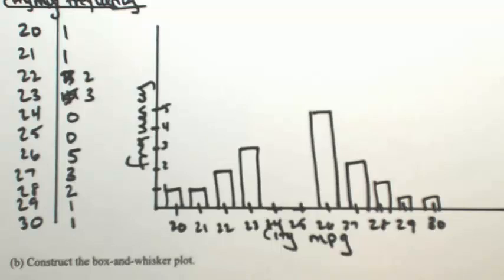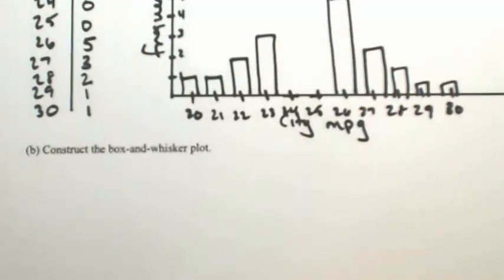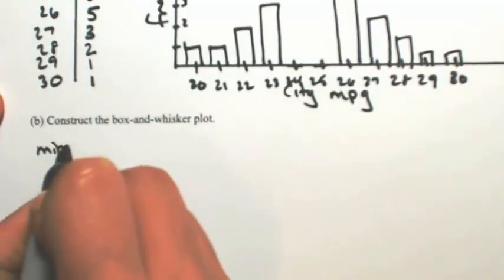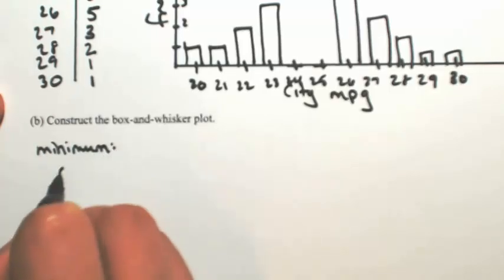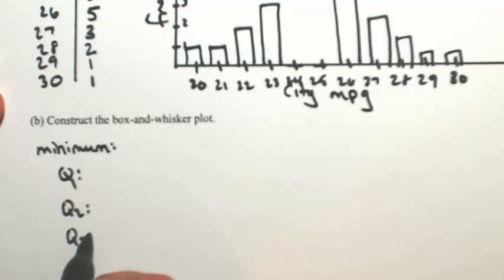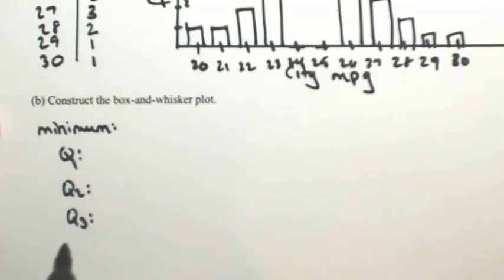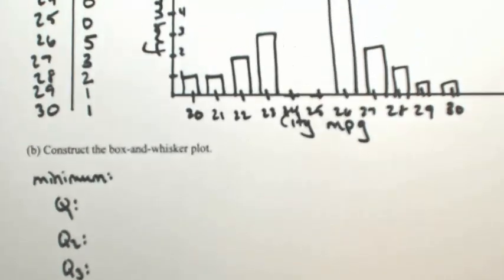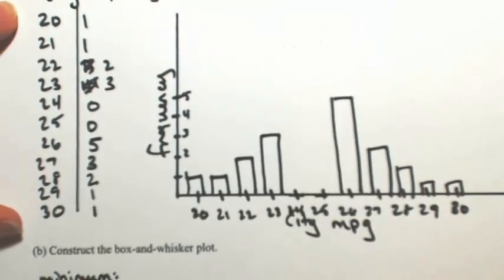The next thing we're going to do with the same data is the box-and-whisker plot. With the box-and-whisker plot we need 5 things: the minimum number, Q1, Q2, Q3, and then the maximum number. Minimum and maximum are easy enough, that's just the smallest number and the largest number, so it's 20 and 30.